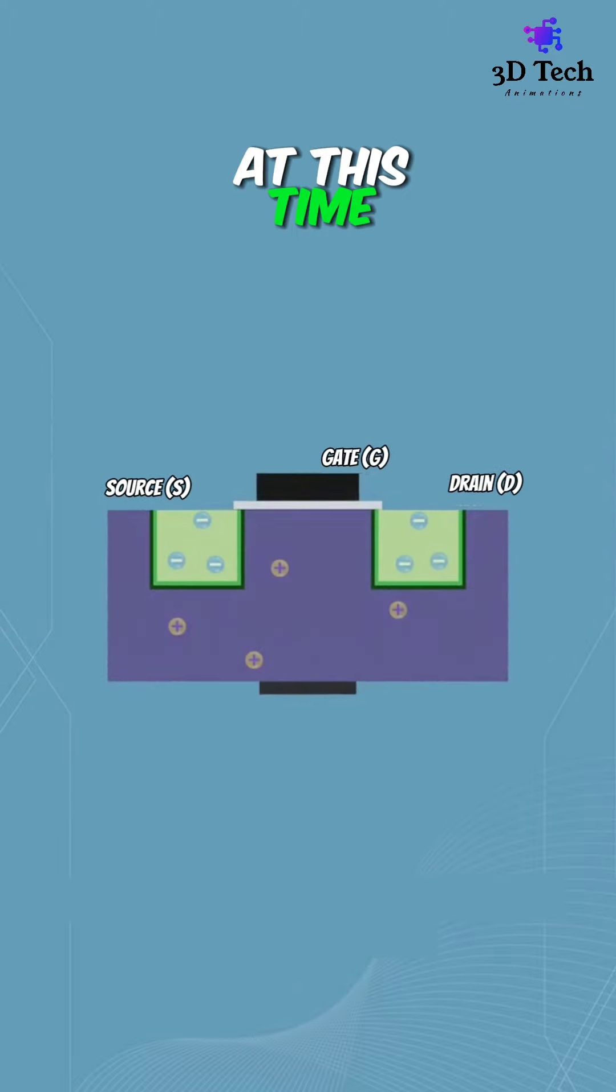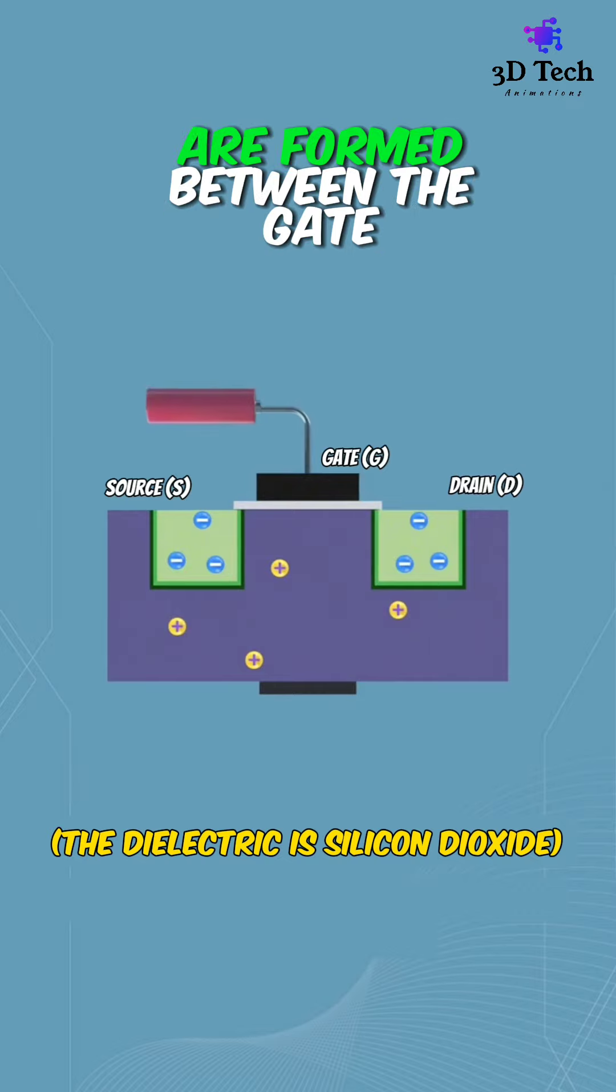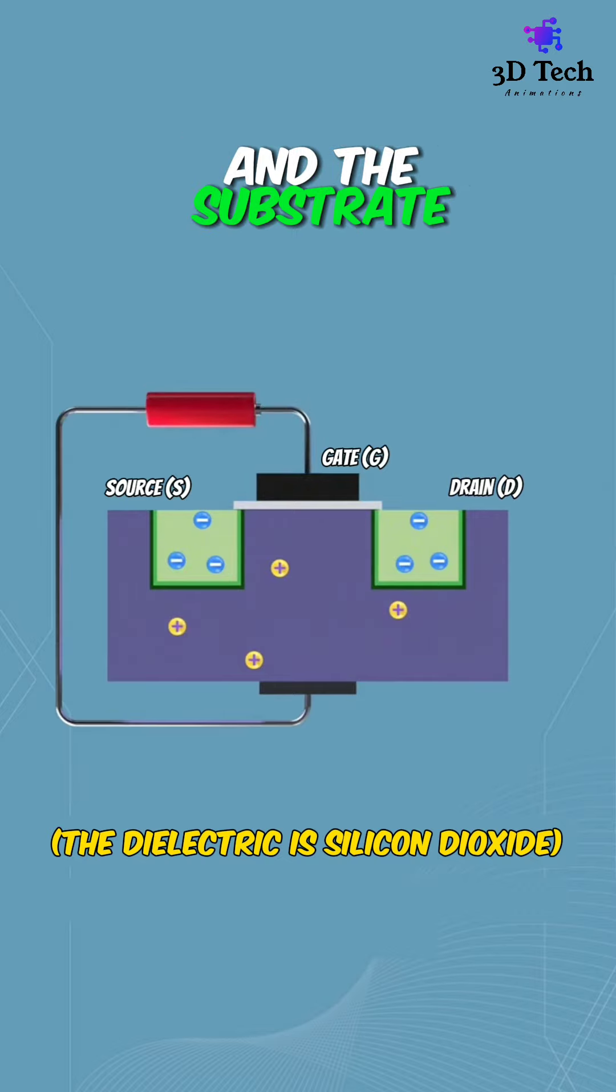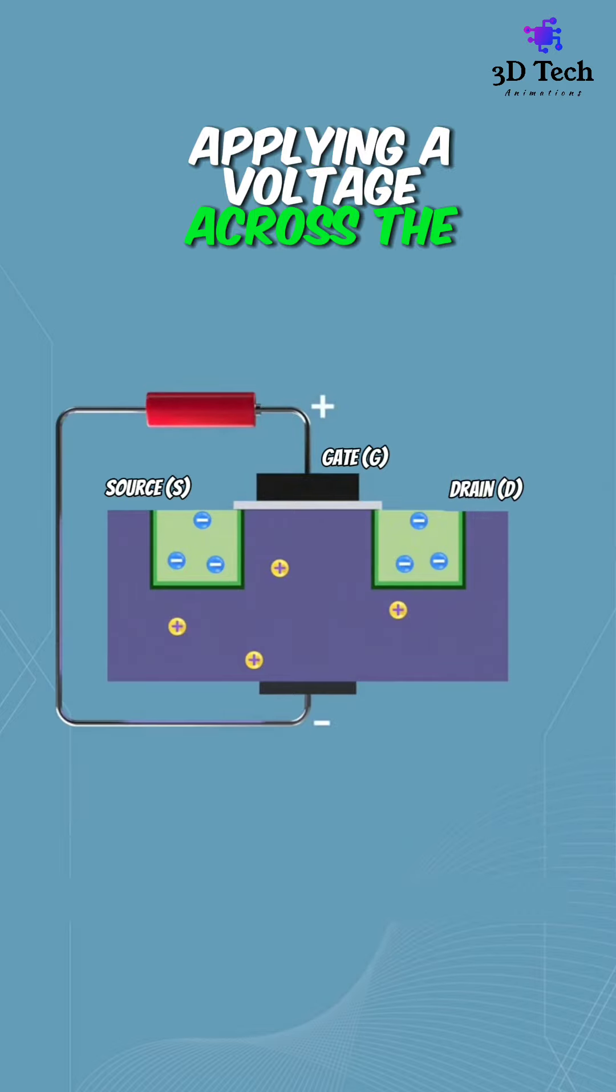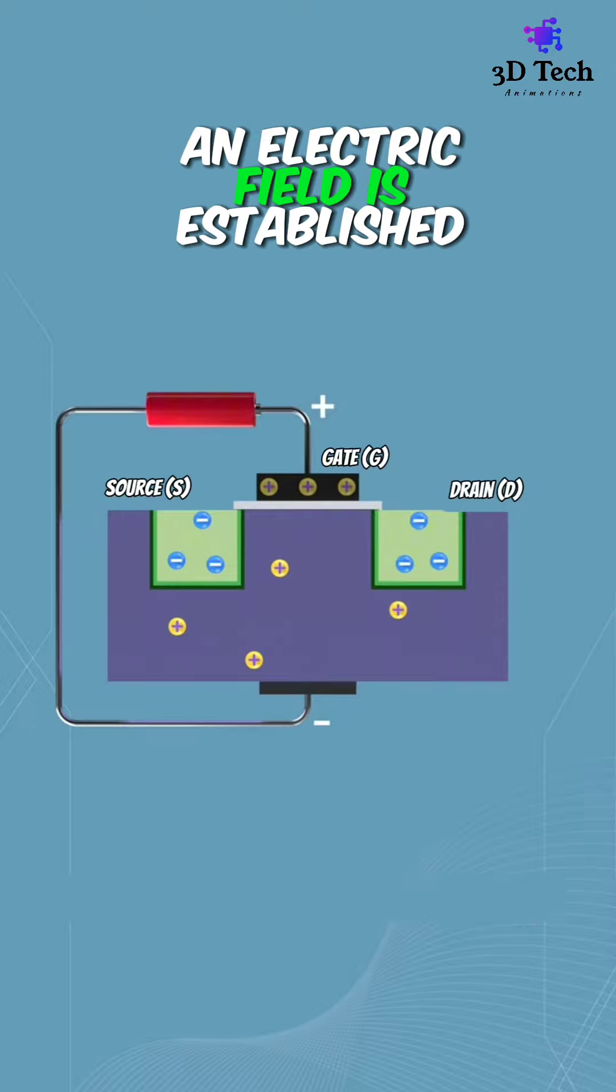At this time, two plates of capacitance are formed between the gate and the substrate. Applying a voltage across the capacitor, an electric field is established.